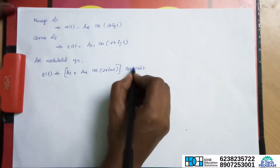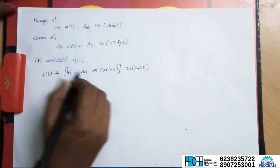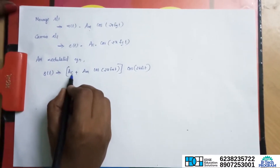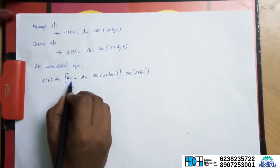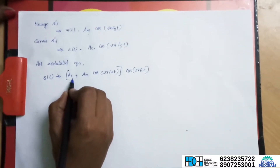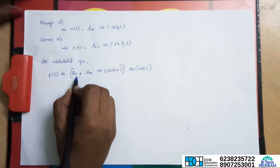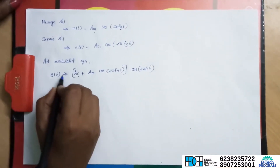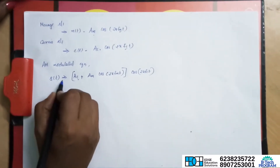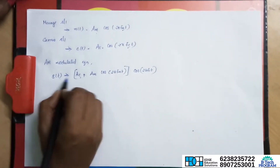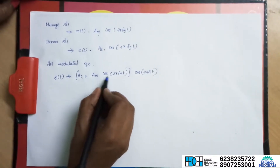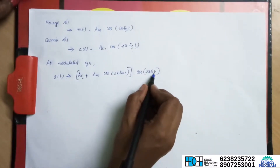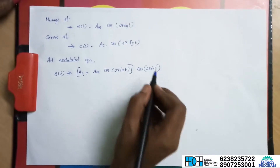The amplitude modulated wave S of t is equal to (Ac plus Am cos 2 pi fm t) into cos 2 pi fc t. The message signal is added to the carrier to produce this result.